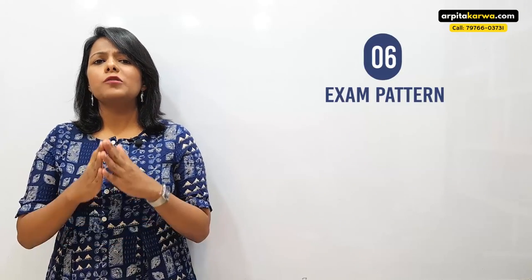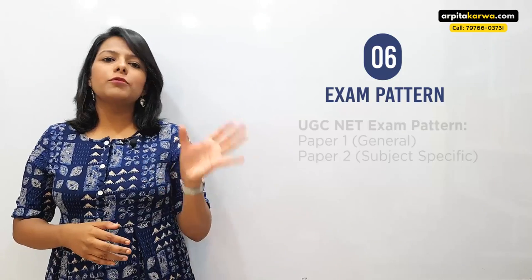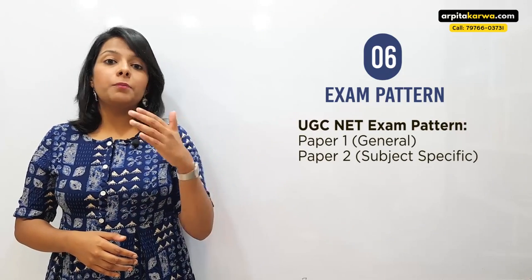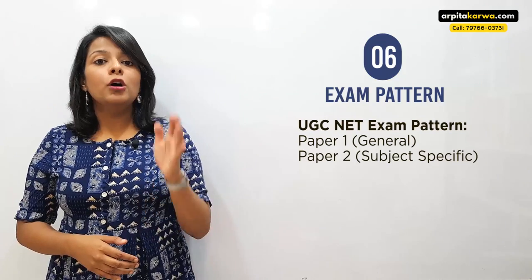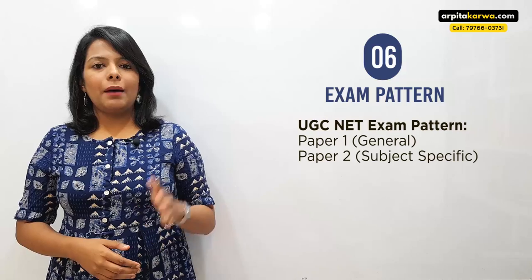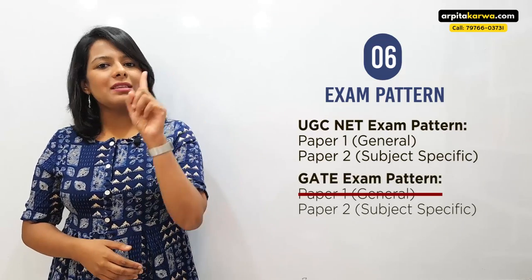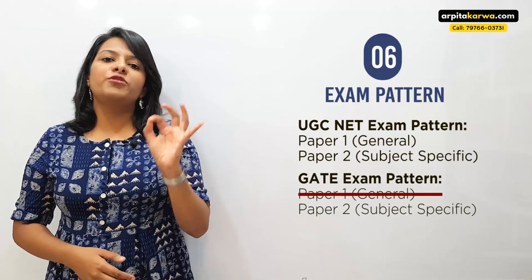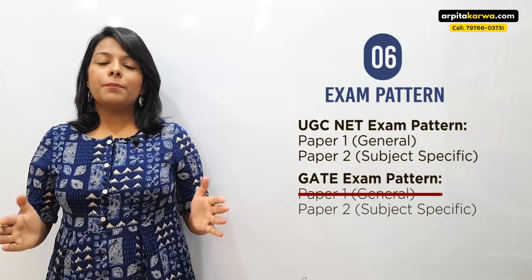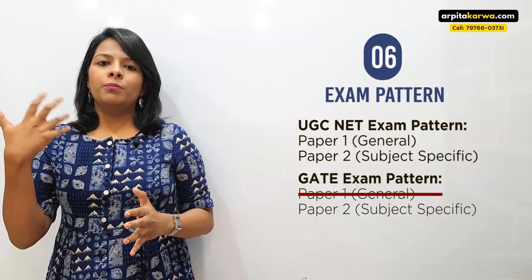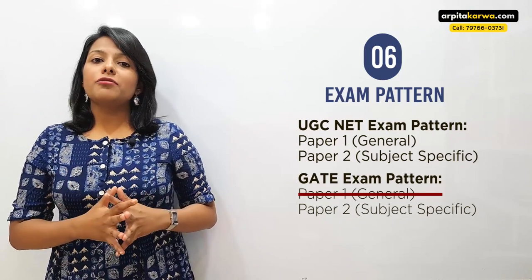The next question is about the paper pattern. It is very similar to the NET exam. In NET you have Paper 1 and Paper 2, where Paper 2 is subject-specific with 100 questions. In GATE, there is no Paper 1 — you just have one subject-specific paper consisting of 100 objective questions. The paper is entirely objective and consists of MCQs.